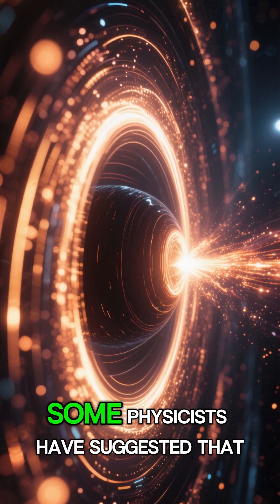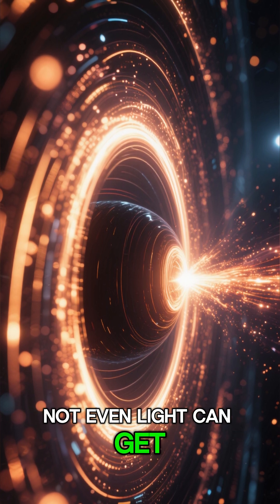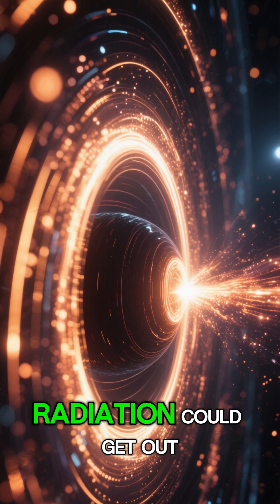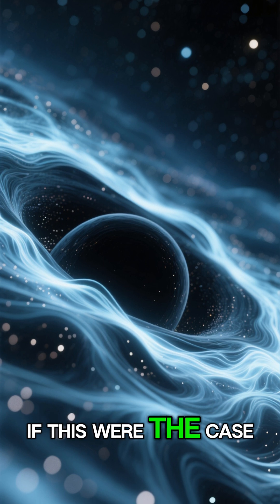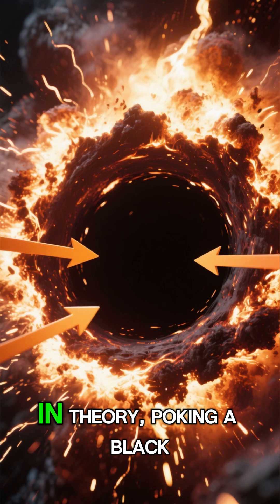Some physicists have suggested that there is a boundary within a black hole where the gravitational pull is so strong that not even light can get out, but where something like Hawking radiation could get out. If this were the case, then black holes could slowly leak energy until they die.